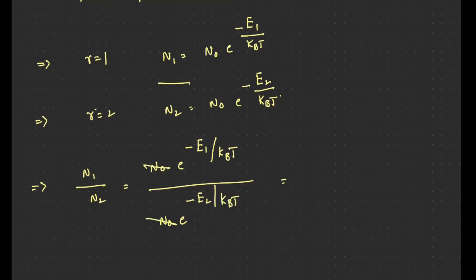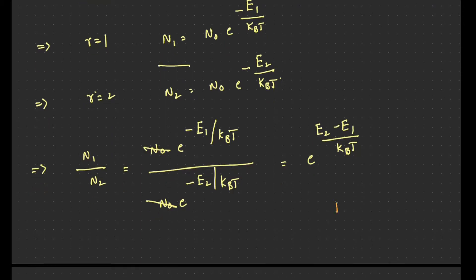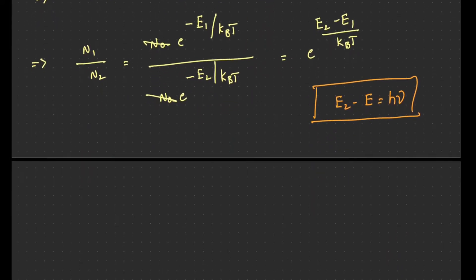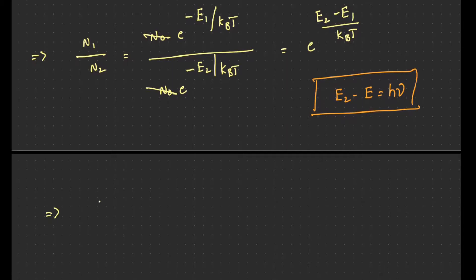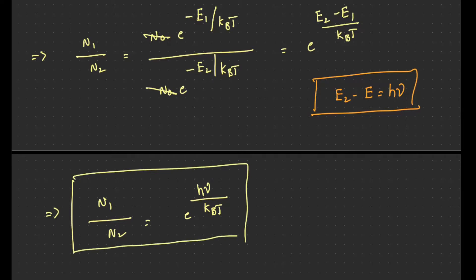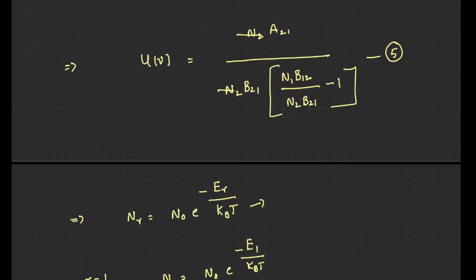Simplifying the ratio: N1/N2 = e^((E2−E1)/kBT). From Planck's radiation law, the energy difference E2 − E1 = Hν. Therefore, N1/N2 = e^(Hν/kBT). This result will now be substituted into equation 5.